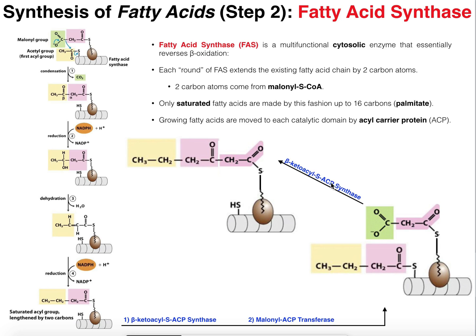The second thing is there's another thiol group on the enzyme beta-ketoacyl-ACP synthase, abbreviated KS. We have to attach the acetyl group from an acetyl-CoA onto that sulfur. This is the only acetyl-CoA we're going to utilize directly in this pathway — it's only the initial two carbons from acetyl-CoA. The rest are not going to come from acetyl-CoA directly.